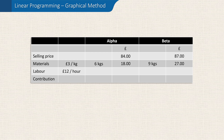Labour costs £12 per hour. The alpha needs three hours of labour time, which will cost £36, and the beta needs two hours of labour time, which will cost £24. Using this data, we can now work out the contribution per unit for both products.